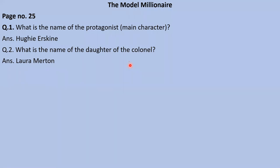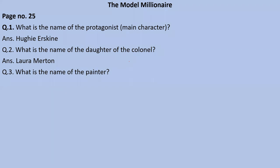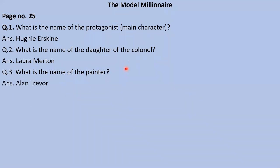Next question: What is the name of the painter — the friend of Hughie Erskine? Ansh, please tell me. Ansh answers: 'Alan Trevor.' Yes, Alan Trevor — very good, right answer! Alan Trevor is the good painter in this chapter.